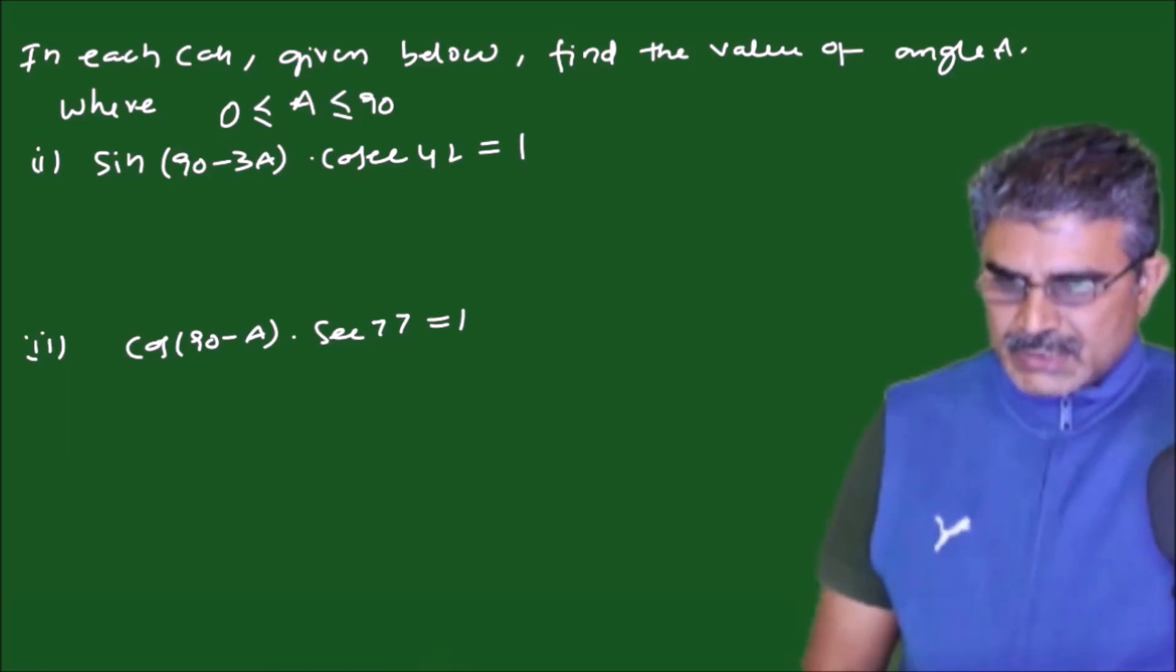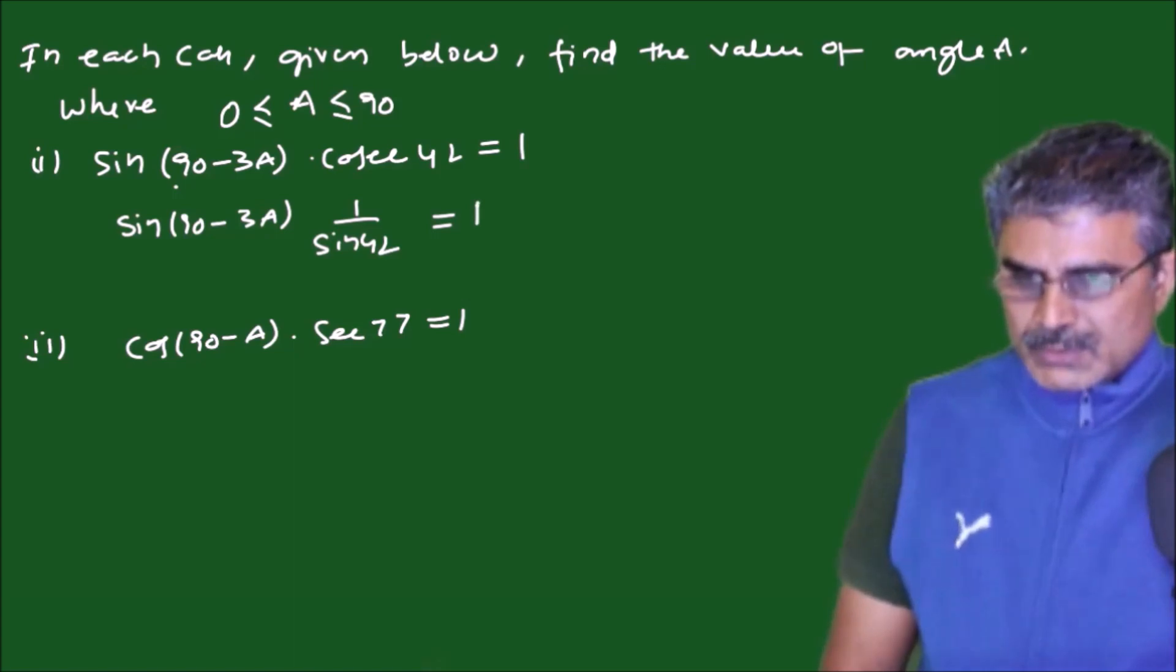Here sin(90 minus 3A) is given and also cosecant 42 is given. So this is 90 minus 3A, let it be like that though it is complemented like this. No need of converting the cosecant 42, I can write 1 by sin 42 which will be equal to 1.